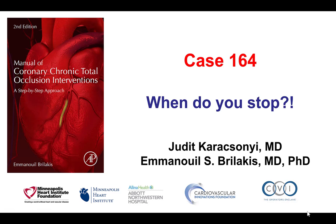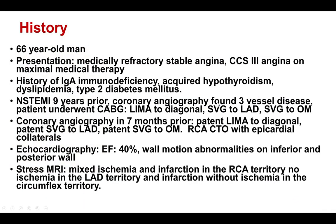Hi, this is Judith Karakshony and Manos Brilakis, and this is case 164 for the Manual of CTO Interventions. This case illustrates some of the challenges associated with CTO PCI in patients with previous bypass. The patient presented with medically refractory angina; he had previous coronary bypass with grafts to the LAD, diagonal, and obtuse marginal branch, and was found to have a right coronary artery CTO with ischemia and viability in the inferior wall in the right coronary artery distribution.